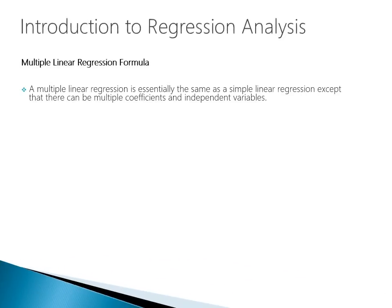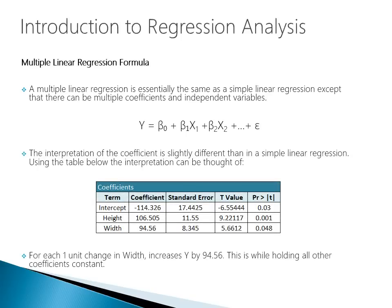A multiple linear regression is essentially the same as a simple linear regression, except there can be multiple coefficients and independent variables. The interpretation of the coefficients differs slightly: using the table shown, for each one unit change in width, y increases by 94.56, while holding all other coefficients constant. That last statement is the important one — as we change the value for one variable, all others remain the same.